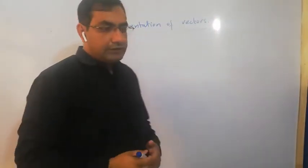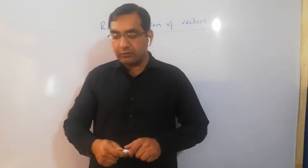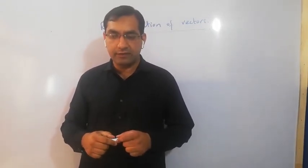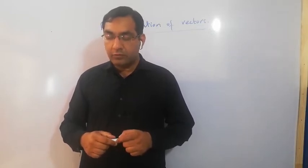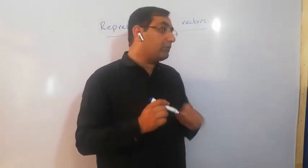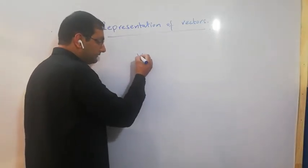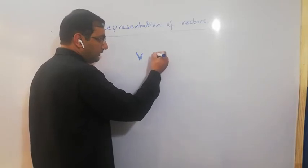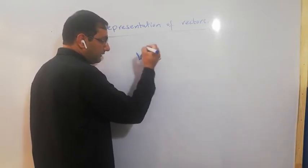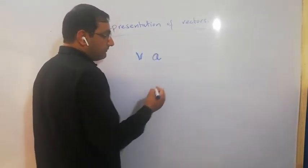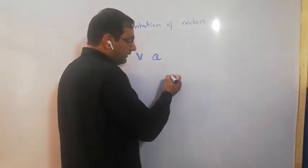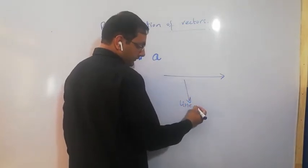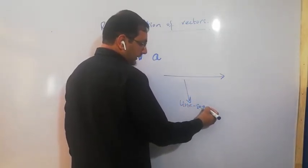Last time I introduced you to Scalar and Vector quantities. For Vector quantities, we basically use bold letters such as V, A, or B. A vector is represented by a line segment.